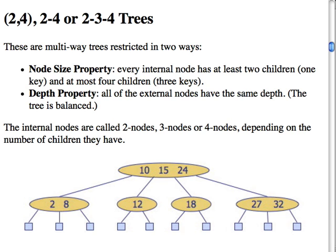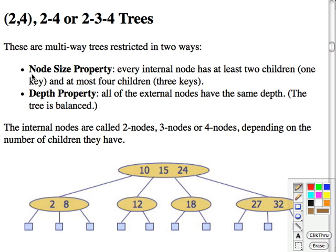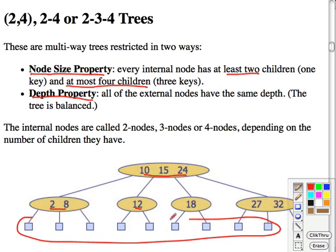So this brings us to the variously named 2-4 or 2-3-4 trees. These are multi-way nodes that are restricted in two ways. One is that they have a node size property that every internal node has at least two children and at most four children. So the multi-way trees could have more children, but we're going to restrict this to going from one key, two keys, or three keys. And the depth property is the other one that all the external nodes, these things down here, must have the same depth. That is, the tree is balanced.